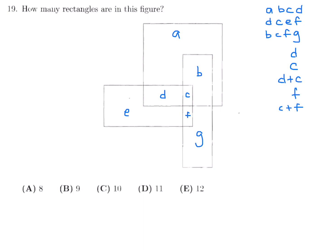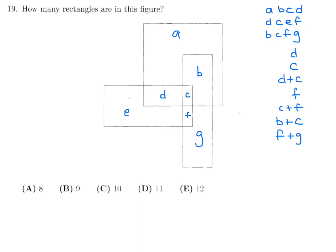Additional rectangles are B+C, F+G, and D+E, bringing the total to 11. Number 19, answer D.